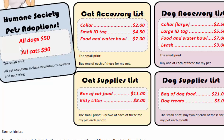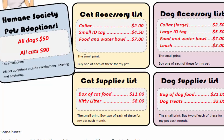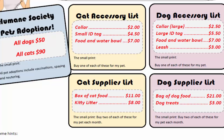For pet adoptions, dogs are $50 and cats are $90. All expenses include vaccinations, spaying, and neutering. However, there are more expenses than just buying the cat or the dog. This is a list of what we consider necessary accessories — the cat has three items and the dog has four.